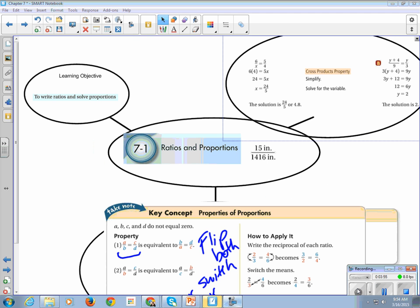Here. So I have two example problems I want to show you. So we're going to start out with 6/X equals 5/4, and we're going to solve for X using the cross-products property. So we get 6 times 4 equals 5 times X. 6 times 4 is 24. To solve for X, we divide both sides by 5, and I get that X is equal to 24/5 or 4.8.